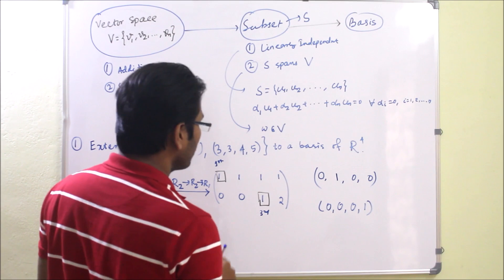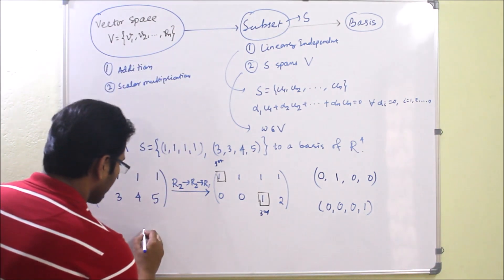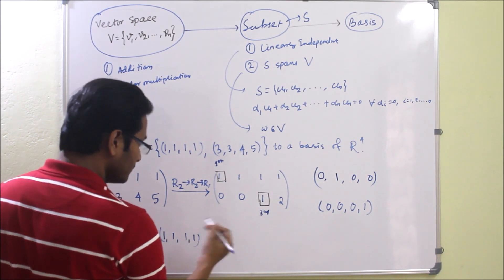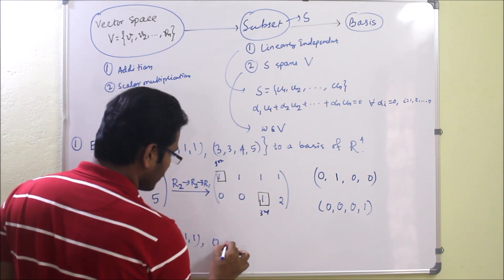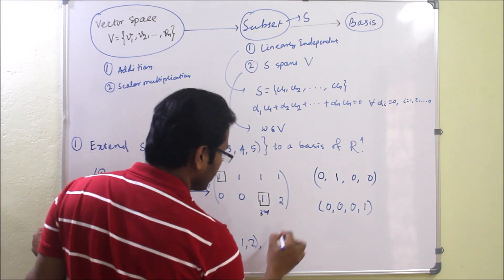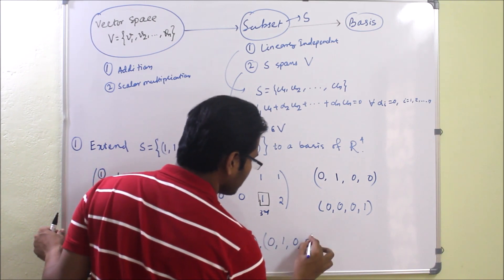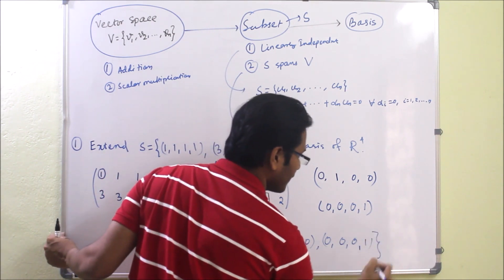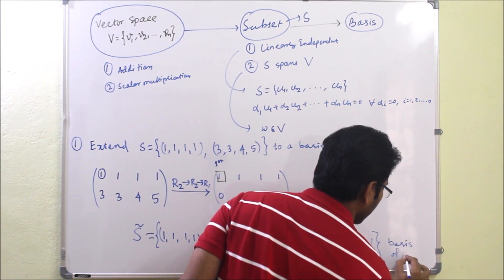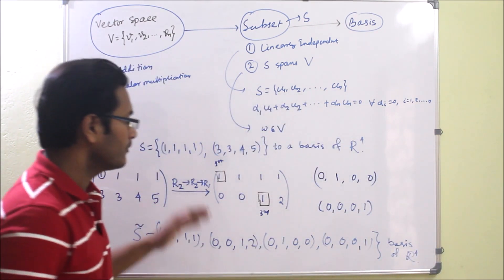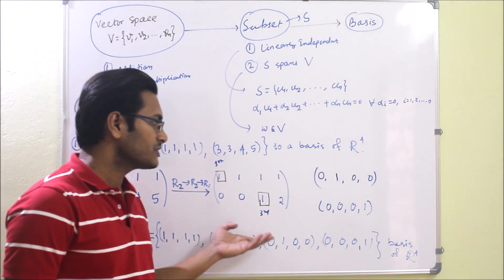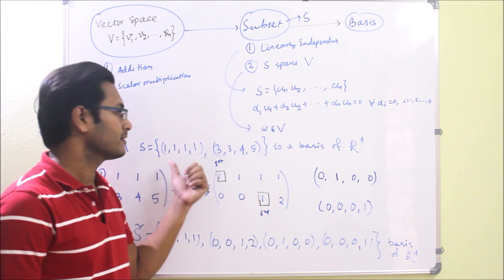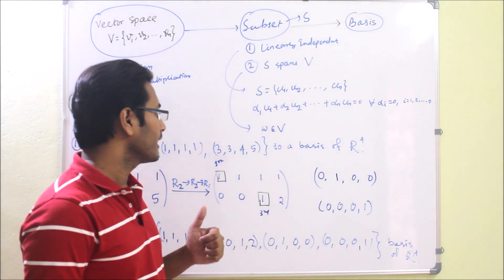We now have four vectors. The new set S̃ that forms the basis of R4 is: (1,1,1,1), (0,0,1,2), (0,1,0,0), and (0,0,0,1). These four vectors form a basis of R4. As stated, a basis is not unique, but in this way we can construct one valid basis by extending S. Other bases will also satisfy the properties, but this method shows how to extend S to a basis.